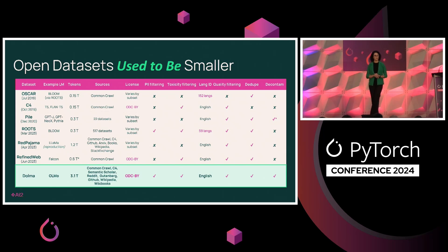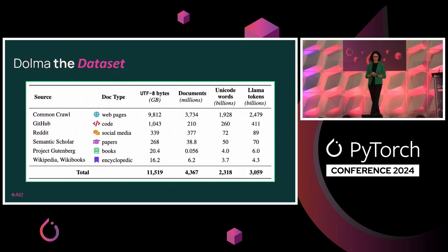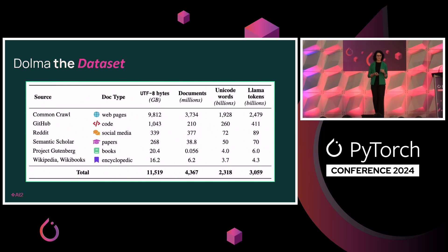To address this gap, last year we introduced the Dolma dataset, which is a pre-training corpus consisting of almost 3 trillion tokens, and it is fully open source. It includes mostly web data, but we also have other sources like code, Reddit, scientific articles, and knowledge sources like Wikipedia.